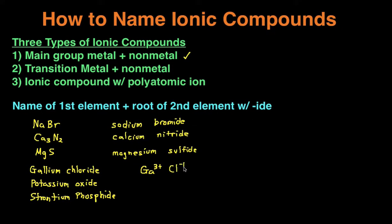Next, we check if these charges cancel out, because overall ionic compounds must be neutral — they're not going to have a charge. We have a positive three and a negative one — they don't cancel out, so we crisscross. You cross the superscript three over and the superscript one over, and then the superscript becomes the subscript. So you get Ga₁Cl₃, but when you have a subscript of one, you don't write it — giving you GaCl₃.